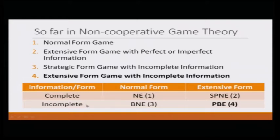Similarly, if you look at the second row, second column — incomplete information in extensive form game — there you will learn perfect Bayesian equilibrium.